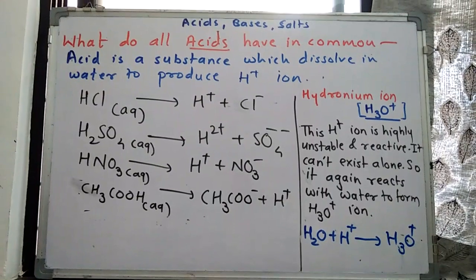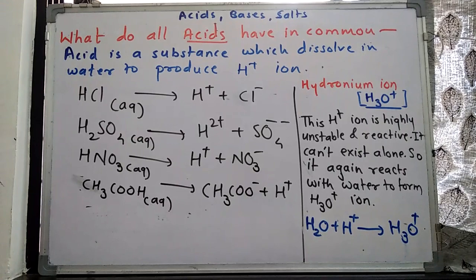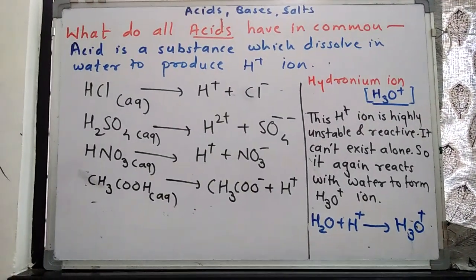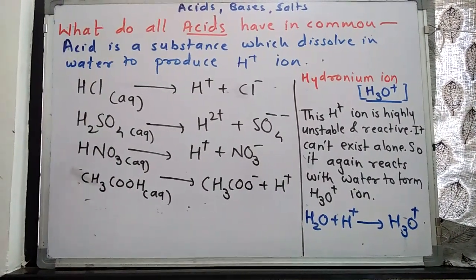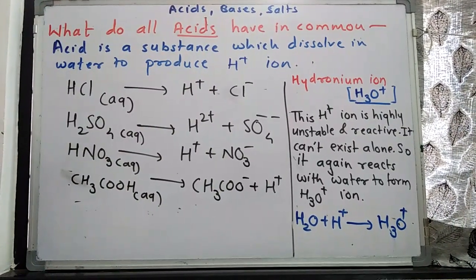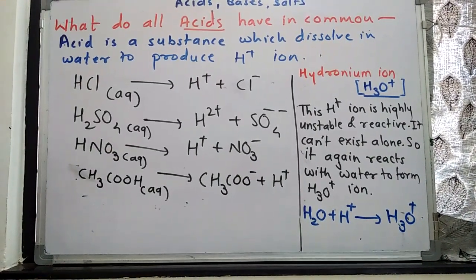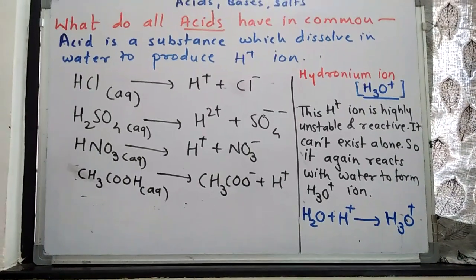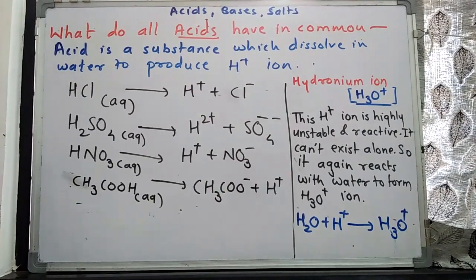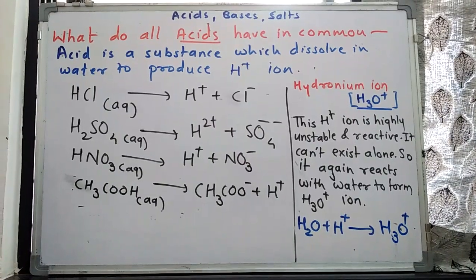Now, what do all acids have in common? Which substance is called an acid? Substances that produce H+ ions when added to water are called acids. Simply having H in the formula does not make a substance an acid. When that substance is added to water — meaning an aqueous solution is made — and it produces H+ ions, then that substance is called an acid.